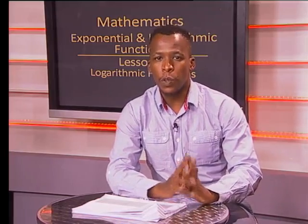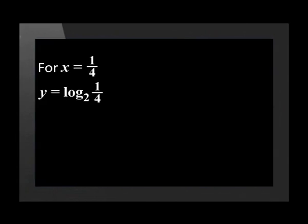Now, let's plot this using a table. We'll do this by substituting values for x and finding the values of y. Let's start by substituting x = 1/4. This means that y = log₂(1/4). We can express it as log₂(2^-2).